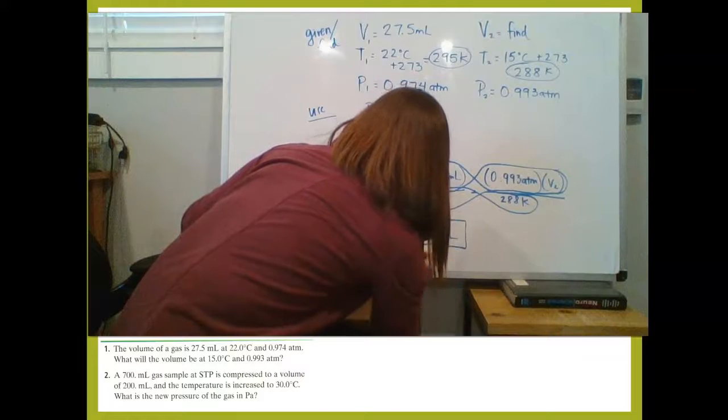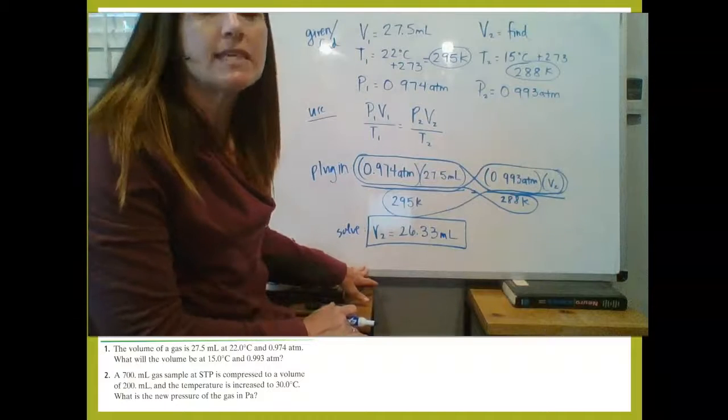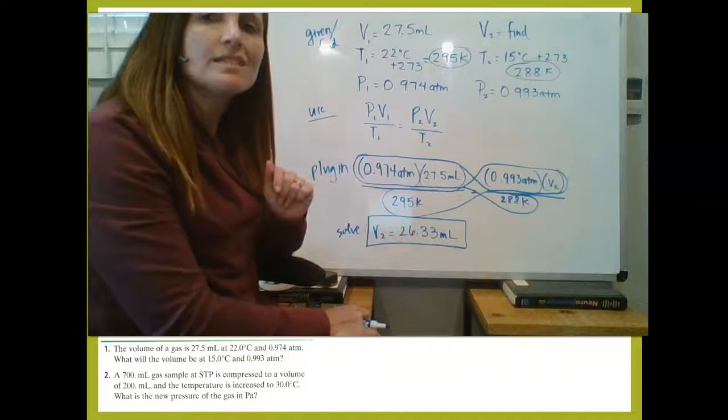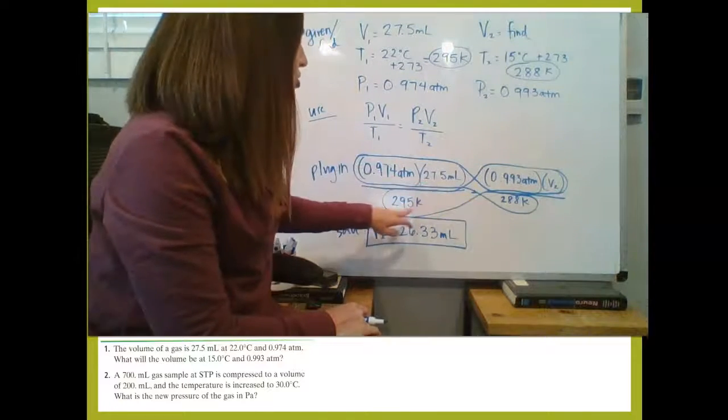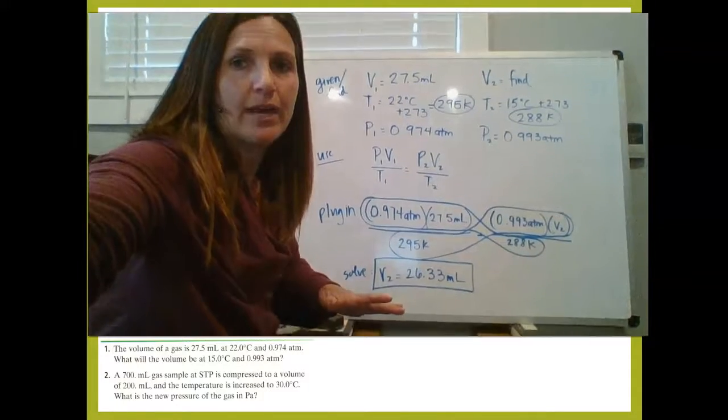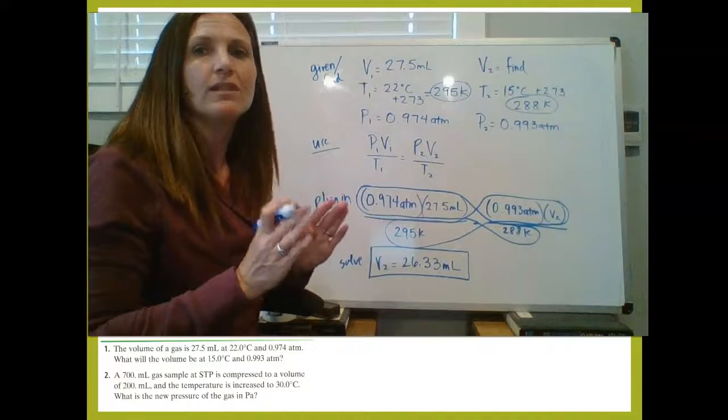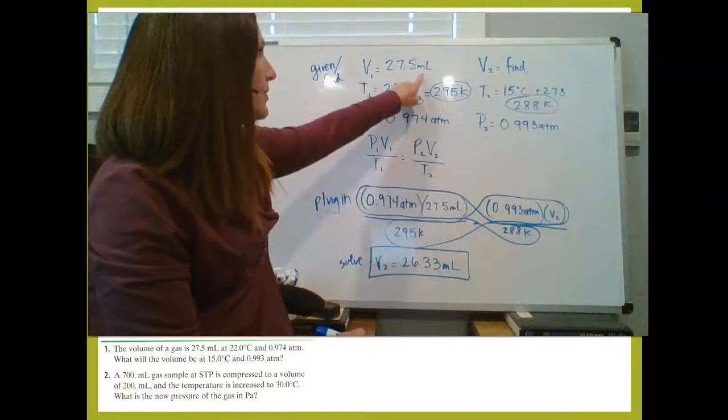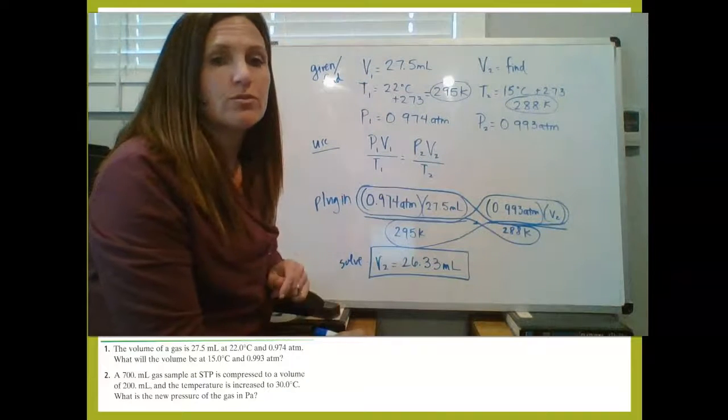I want to talk about a few things about that before we go on. So 26.33 milliliters. What we see here is, first of all, that my volume is relatively similar to my initial volume, which makes me feel good because my temperature didn't change by much and my pressure didn't change by much. It would alarm me a little bit if my volume changed by a whole lot. And then the other thing that we know is that my unit of volume to begin with is my unit of volume at the end. So I know that it's in milliliters.